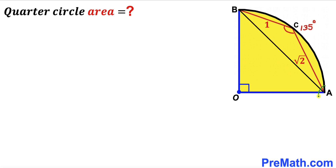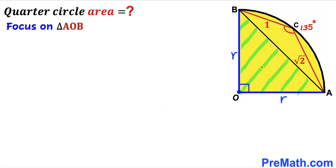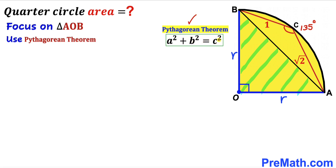In the next step, I connect points A and B. We observe that AO is the radius r of the quarter circle, and OB is also r. Focusing on right triangle AOB and applying the Pythagorean theorem — a² + b² = c² — where the hypotenuse is side c and the two legs are both r.